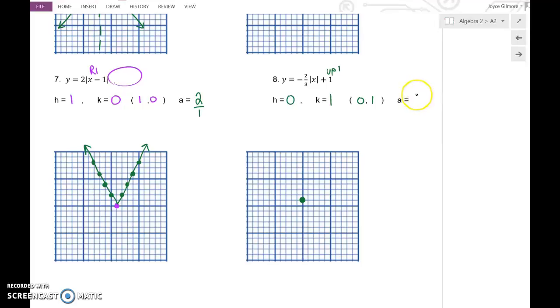Our a value is negative 2 thirds. So from that vertex, and if you want to draw in the symmetry line so you can see where the vertex is, if you want to draw a little arrow reminding you which one is the vertex, whatever you need to do so you don't forget which one is the vertex, from that vertex down 2 out 3. And repeat that a few times. And then down 2 left 3 from the vertex to make sure you get the left side of the V.